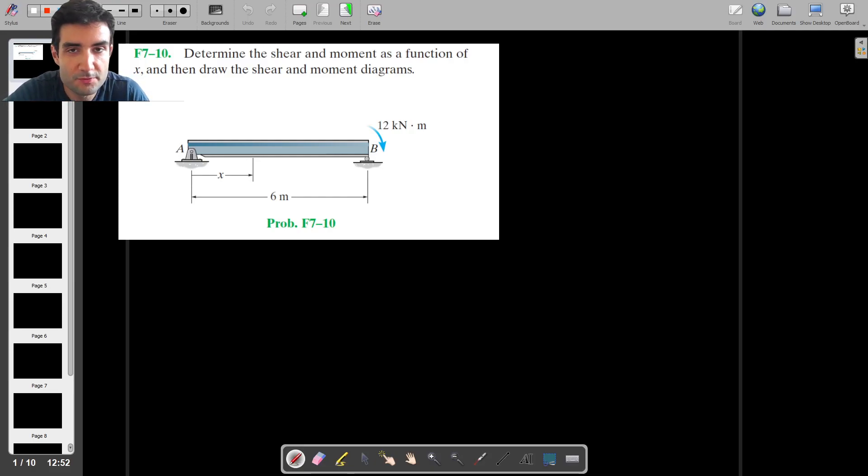This is the fifth problem from the miniseries related to finding the shear force and bending moment diagram for a beam under different kinds of load conditions. In this particular case we have a beam which is simply supported, so it's simply supported at A, and then there's a roller support at B.